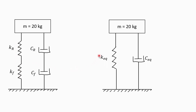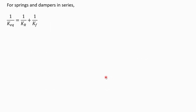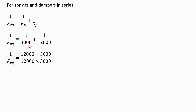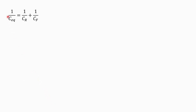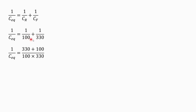As they are in series, 1 upon k_equivalent equals 1 upon k_r plus 1 upon k_f. With k_r equal to 3000 and k_f equal to 12,000, cross-multiplying gives k_equivalent equal to 2400 N/m. Similarly for the damping coefficient: 1 upon c_equivalent equals 1 upon c_r plus 1 upon c_f. Cross-multiplying with values 330 and 100, the value of c_equivalent comes out to be 76.744 N·s per meter.